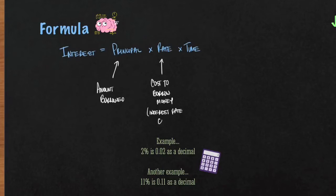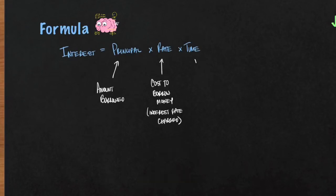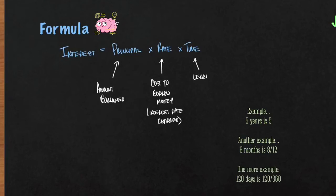Next we have the time. The time is always expressed in years. This is the length of time that you're borrowing the loan for. Again, very important that this is always expressed in years, so if the problem gives you months or days, you have to express that as a fraction of the year.